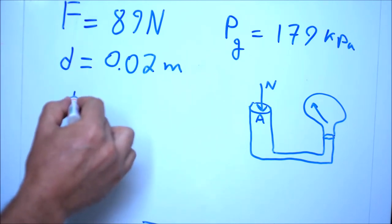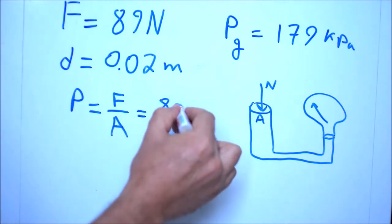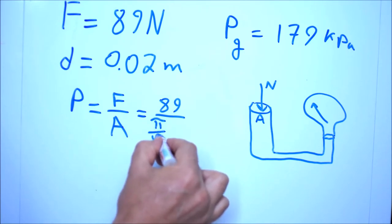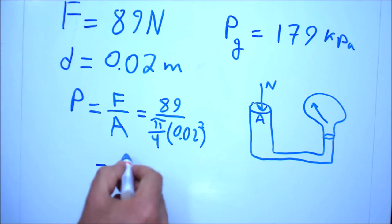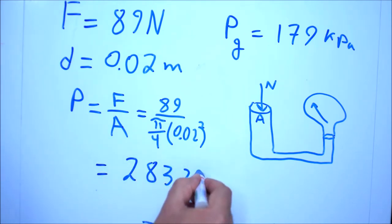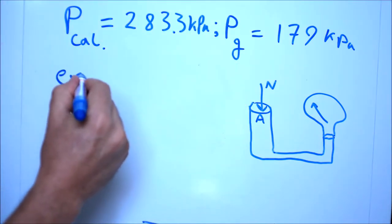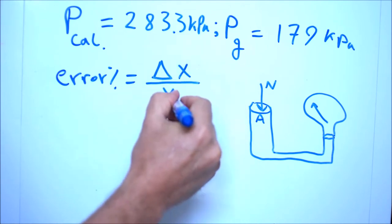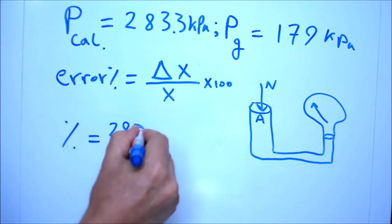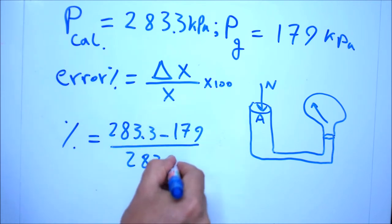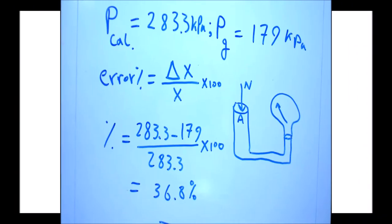We calculate the pressure generated by the force: pressure equals force divided by area, so 89 divided by pi D squared over 4. The pressure generated is 283.3 kilopascal. The difference between the gauge pressure and the calculated pressure is huge. The error percent is calculated as the difference between the two values divided by the reference value multiplied by 100. So the error percent is (283.3 minus 179) divided by 283, multiplied by 100, which is more than 36%. This is huge, so we cannot use this pressure gauge.